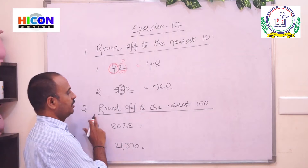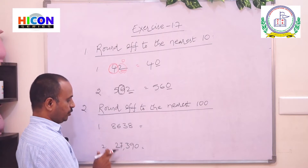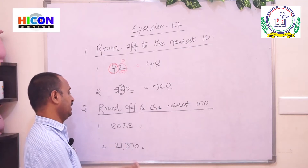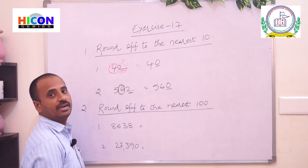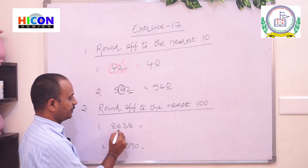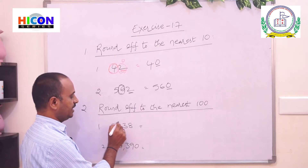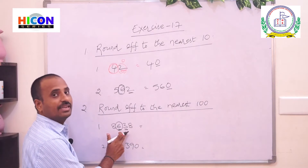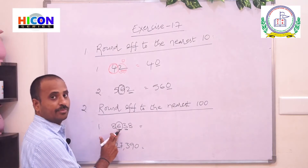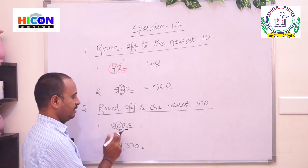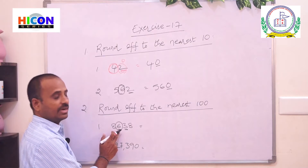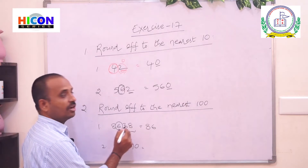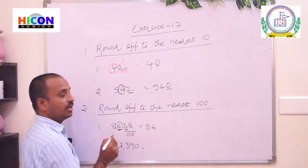Second problem: round off to the nearest hundred. Two numbers are given and we have to round them to the nearest hundred. First, identify the digit in the hundreds place — it is 6. Check the next digit: it is 3, and 3 is less than 5, so write the same hundreds — 6 hundreds, no change. There are 2 digits after the hundreds place, so write 2 zeros after the hundreds place.